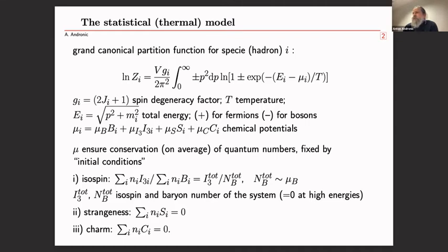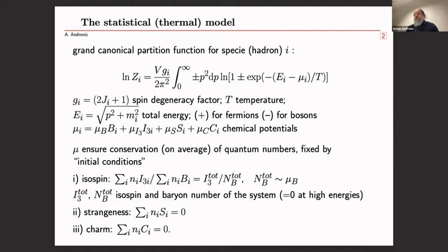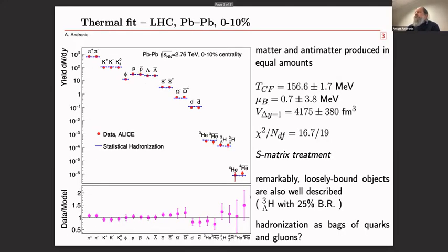By imposing conservation laws — namely charm and strangeness neutrality, isospin, and baryon number — with the system tuned to mu_b, which reflects the degree of stopping of the two colliding nuclei, one is left with two fitting parameters when fitting ratios: temperature and mu_b. Or three if one fits yields, the third being the volume. Here is the result of the fit in the UDS sector.